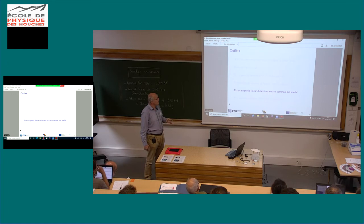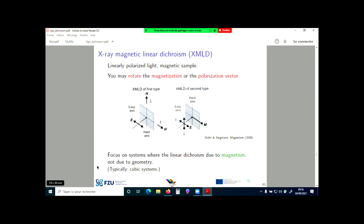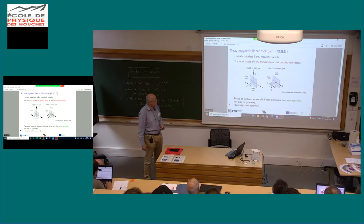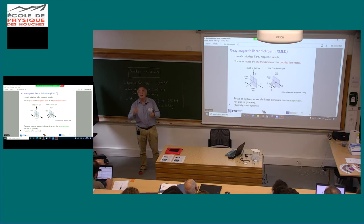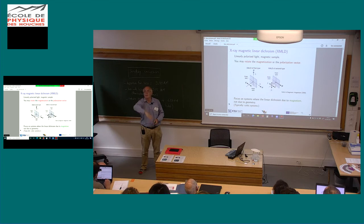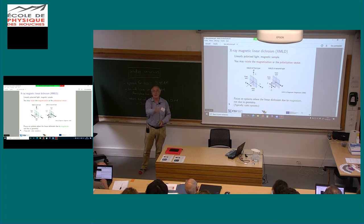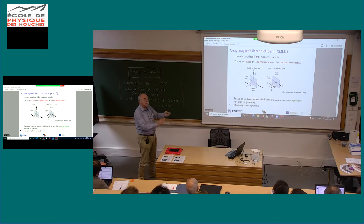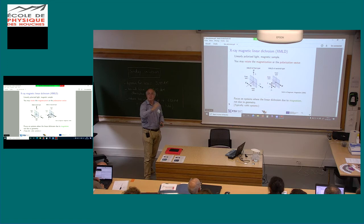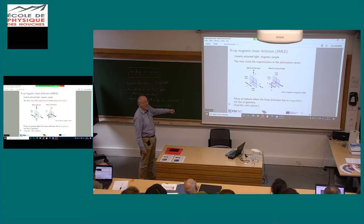X-ray magnetic linear dichroism, XMLD. Before, I spoke about linear dichroism for non-magnetic systems. If the system is magnetic, geometry interferes with magnetism. In the case of a cubic system — where there would be no dichroism without magnetism — we usually speak about X-ray magnetic linear dichroism. You focus on systems like cubic systems where linear dichroism would not arise without magnetism, and you measure the dichroism due to magnetism.